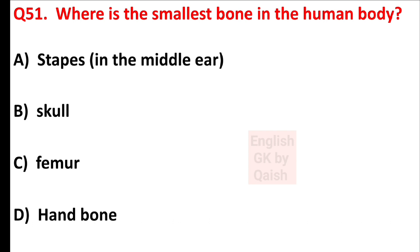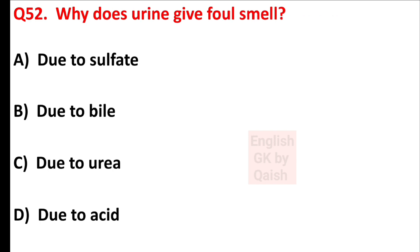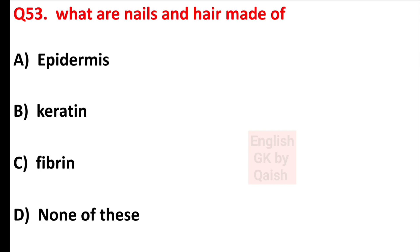Where is the smallest bone in the human body? Answer is option A — stapes in the middle ear. Why does urine give a foul smell? Answer is option C — due to urea. What are nails and hair made of? Answer is option B — keratin.